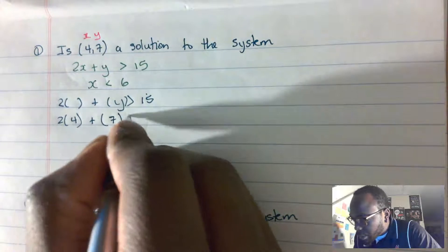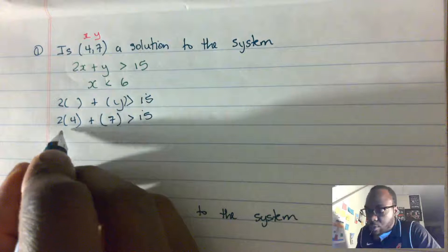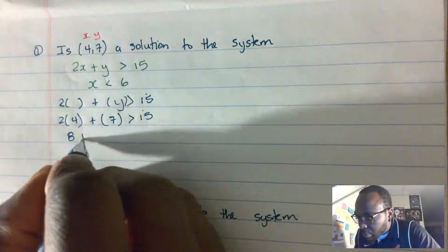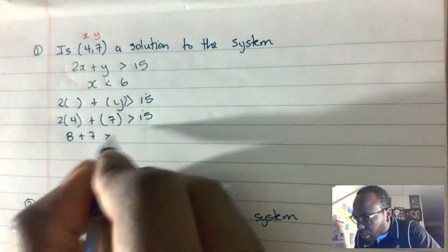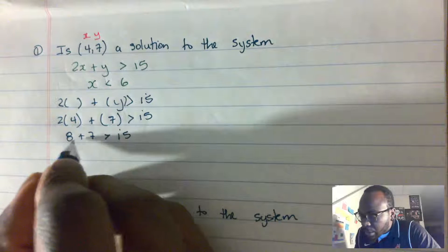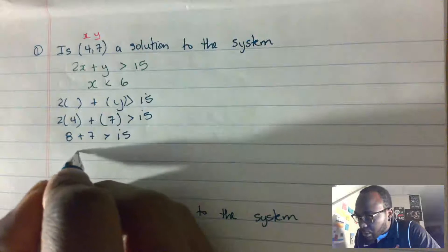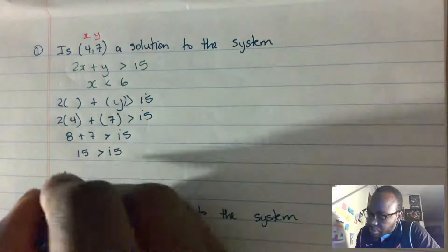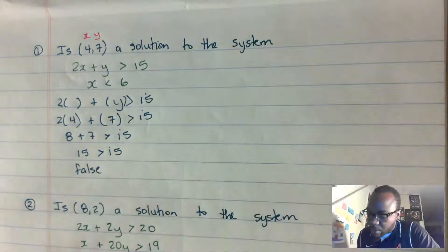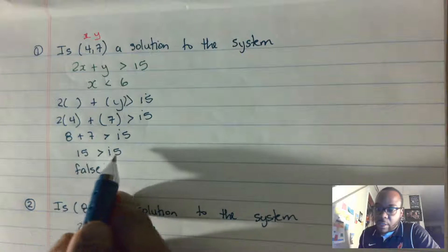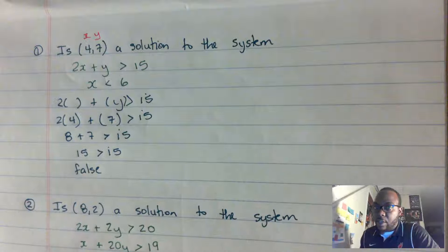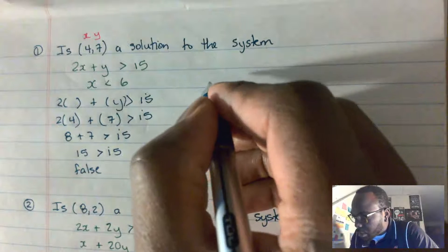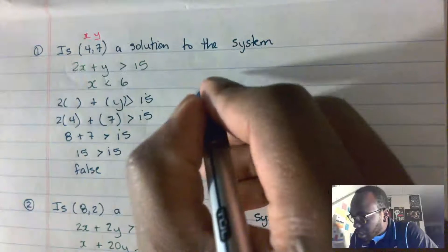We know y is 7, so we have 2 times 4, which is 8, plus 7, greater than 15. That gives us 8 plus 7 is 15, but 15 is not greater than 15. So this is a false statement.